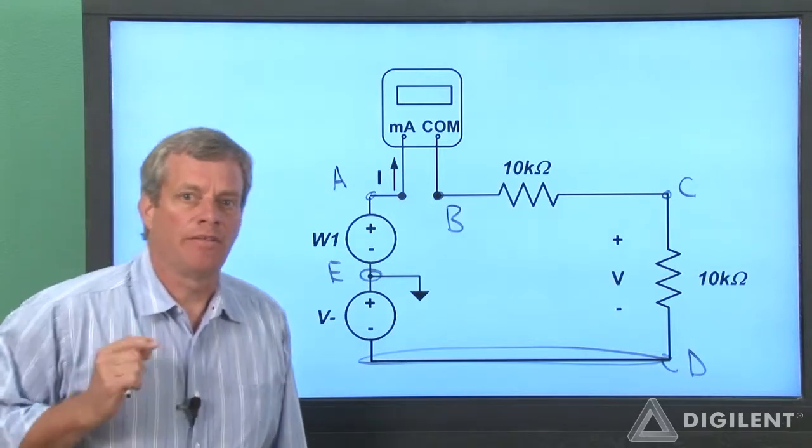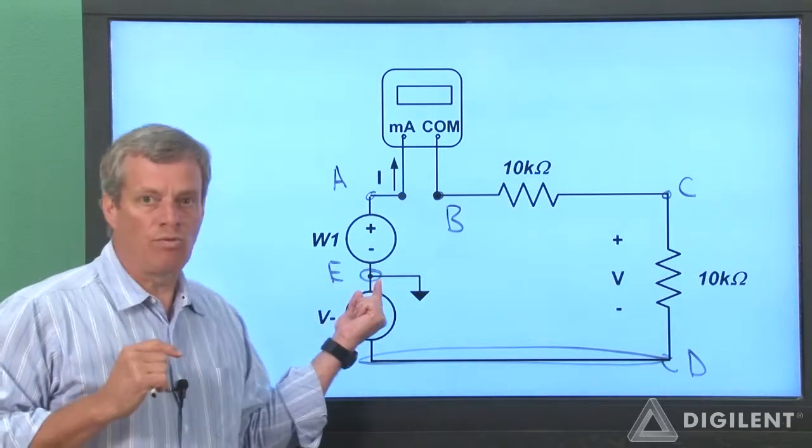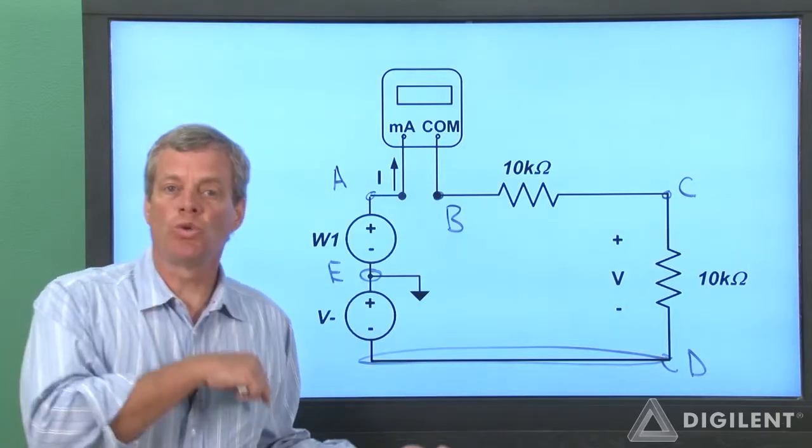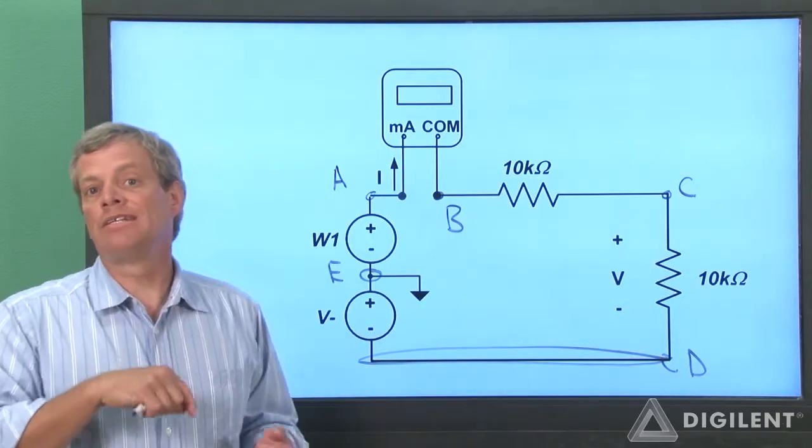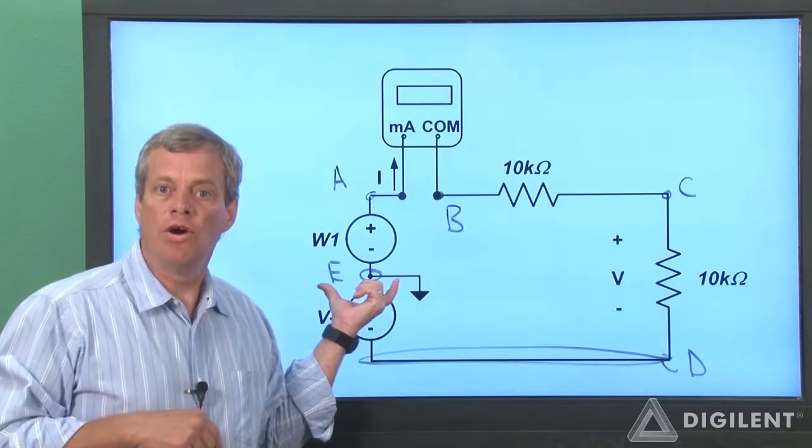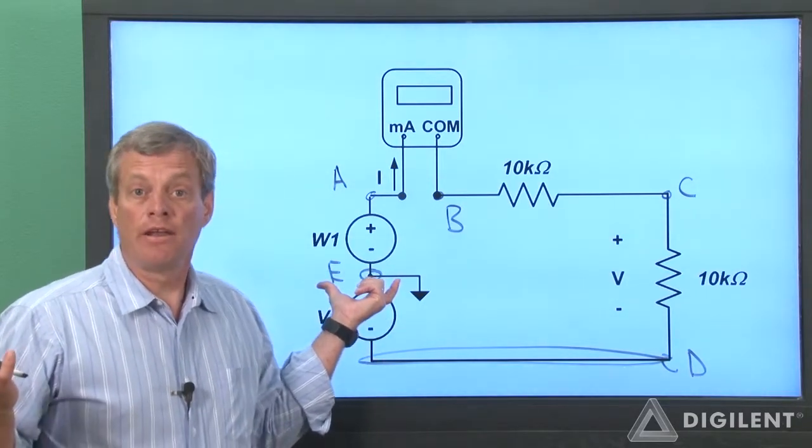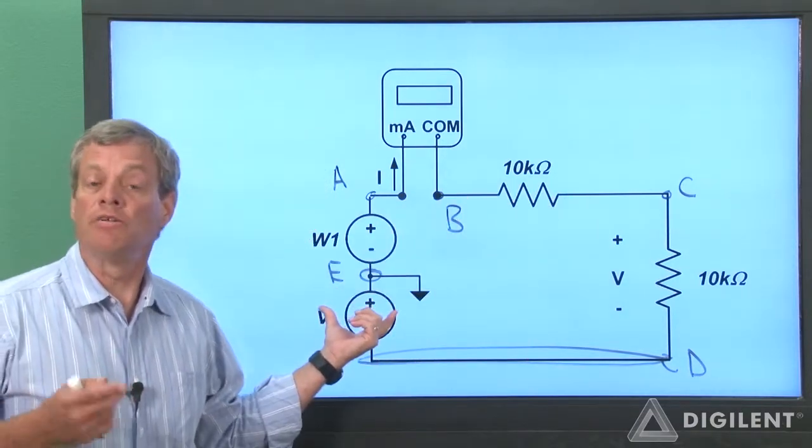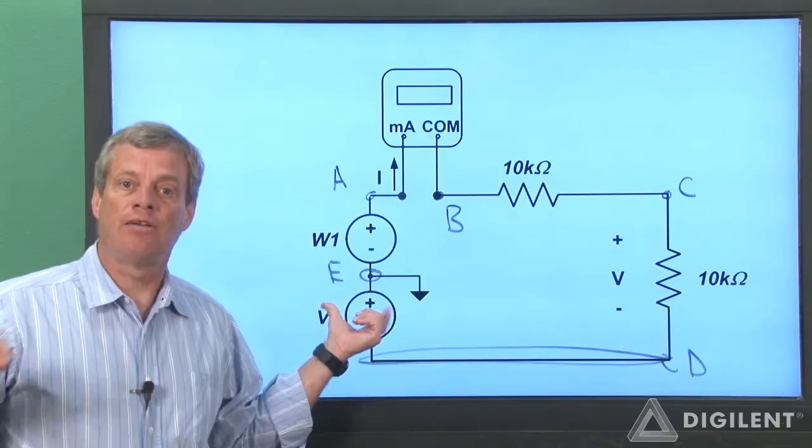Now there's kind of a weird thing about this circuit. Node E is ground. Nothing is connected to node E except the sources. Since ground is set inside the analog discovery, we don't actually have to implement node E on our breadboard. None of the components, the resistors or the measurements, are directly connected to ground. Node E is inside the analog discovery.